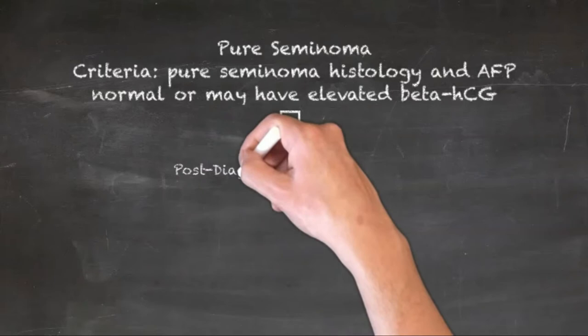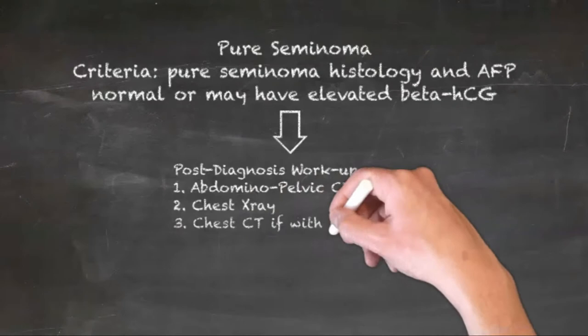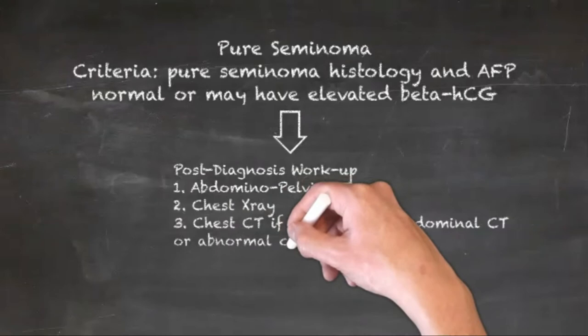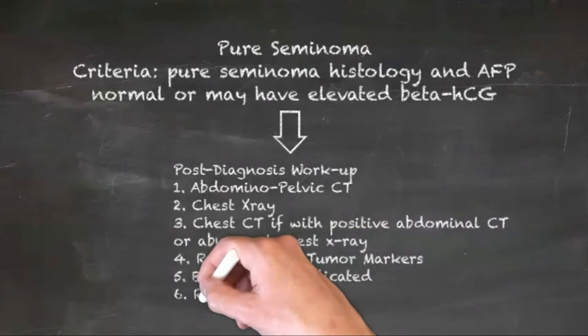In patients with newly diagnosed GCT, clinicians must obtain a CT scan of the abdomen and pelvis with IV contrast, or MRI if CT is contraindicated. Clinicians must also obtain chest imaging. In the presence of elevated or rising post-orchiectomy markers, HCG and AFP, or evidence of metastasis on abdominal or pelvic imaging, chest x-ray, or physical exam, a CT chest should be obtained.